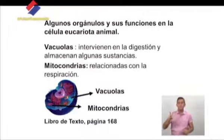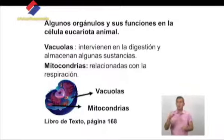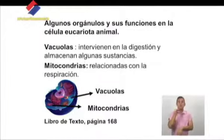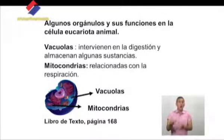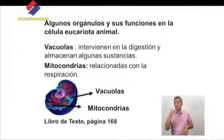Algunos orgánulos que encontramos en el citoplasma de la célula eucariota, por ejemplo, las vacuolas y las mitocondrias. Ahora nos estamos refiriendo a la célula eucariota animal, donde encontramos las vacuolas y las mitocondrias. En el caso de las vacuolas, estas intervienen en la digestión y almacenan algunas sustancias. Y las mitocondrias son las relacionadas con la respiración. Aquí en la foto les muestro dónde podemos localizar las vacuolas y las mitocondrias en una célula eucariota animal.